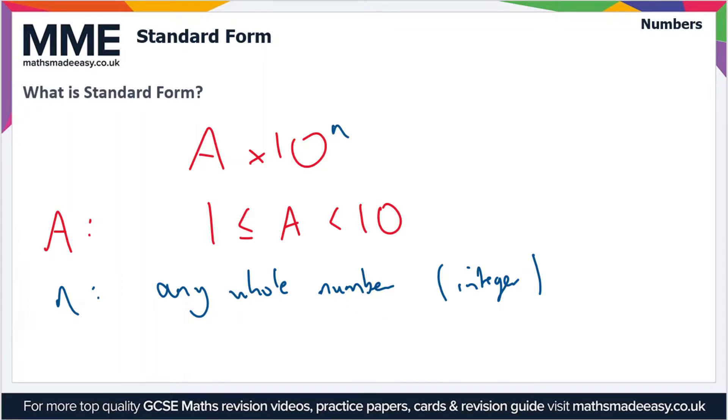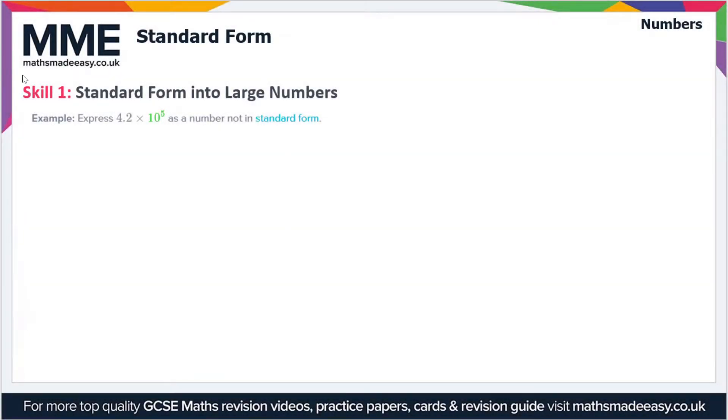So we'll move on to look at some examples to see this in practice. So let's start with this first example where we're expressing a number in standard form and we want to convert to a normal number. So we have 4.2 times 10 to the 5. And now if you remember, the standard form was A times 10 to the power n.